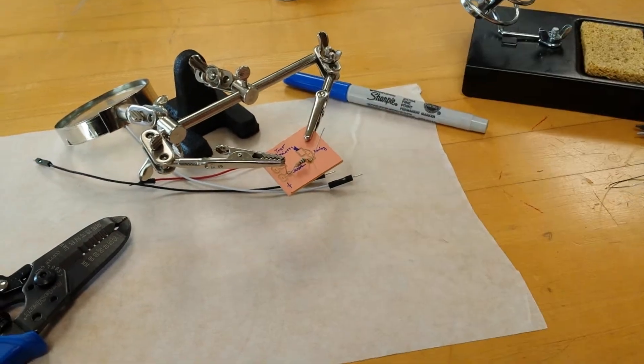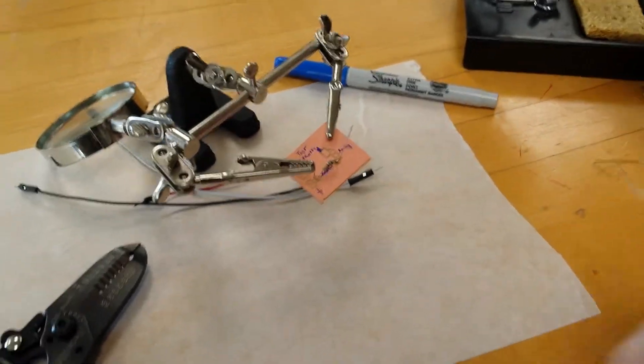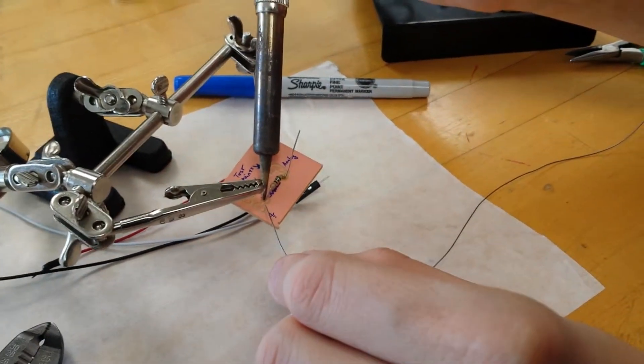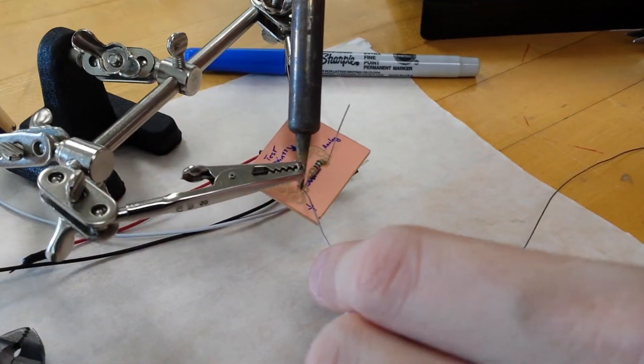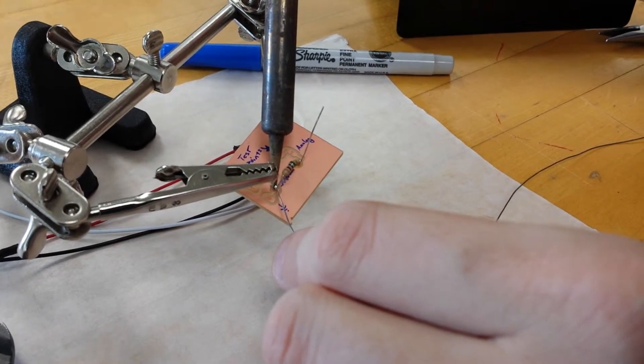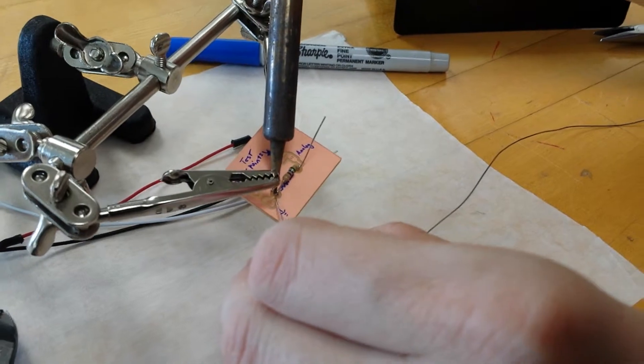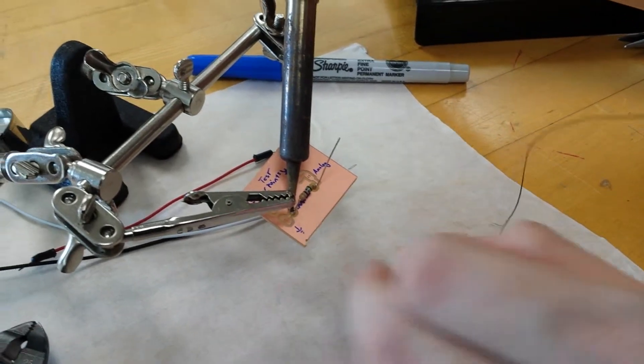I can move the whole thing now. You want to do the same thing with this other end. So I'm going to apply heat to both the pad and the pin of the resistor and apply just a tiny bit of solder.